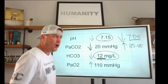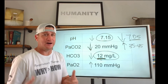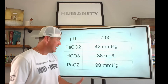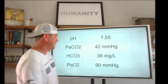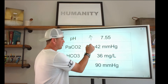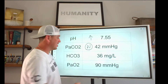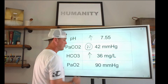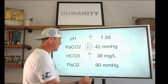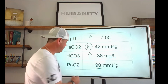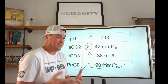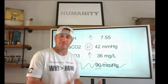Not all of our patients are always in metabolic acidosis. Sometimes they are in a metabolic alkalosis. We see that here — we have an elevated pH, that's an alkalosis; we have a normal CO2; we have a bicarb of 36, which is increased, and that's what's causing the pH to be 7.55; and we have a normal PaO2. PaO2 doesn't really play a role in acid-base balance.